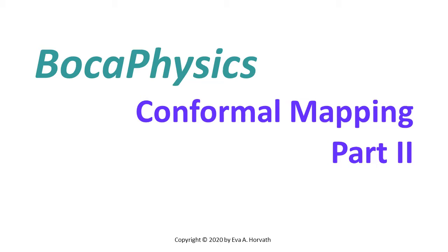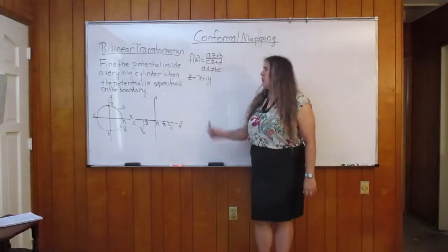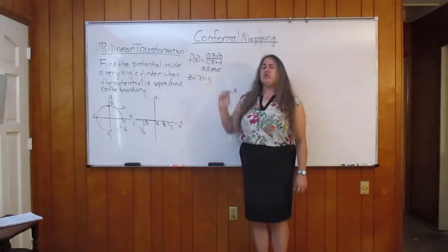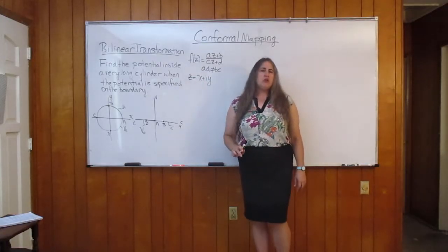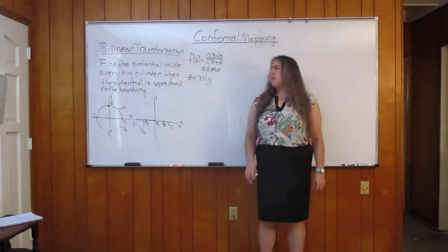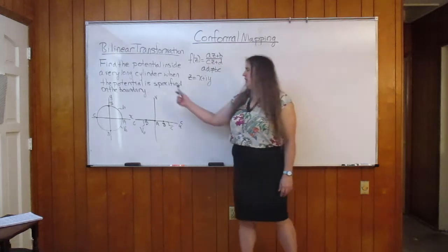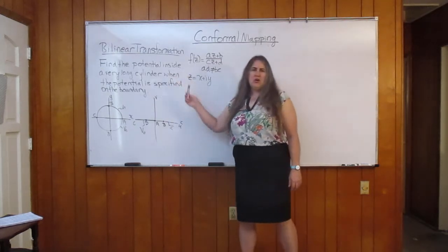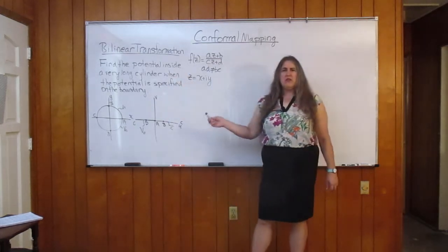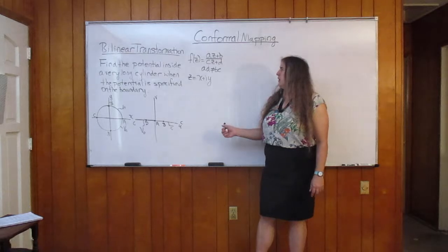This is part of the Book of Physics series on electromagnetism. This is part two of conformal mapping. In part one, we introduced bilinear transformation, which is used to map shapes in the z-plane over to shapes in the w-plane.